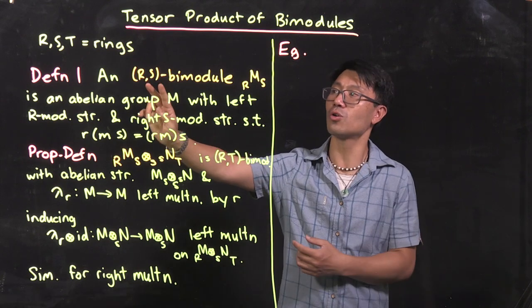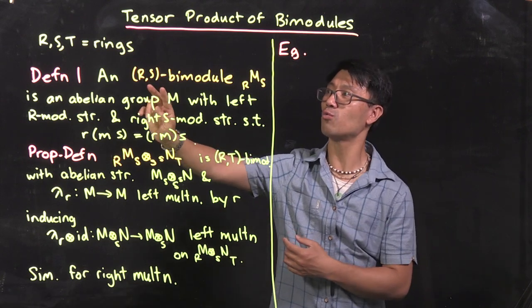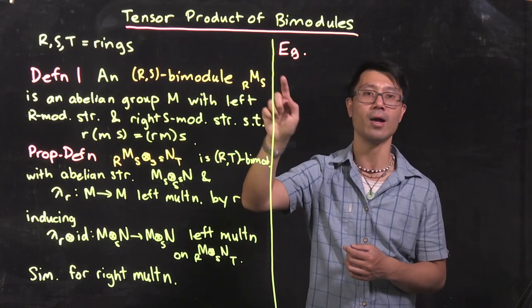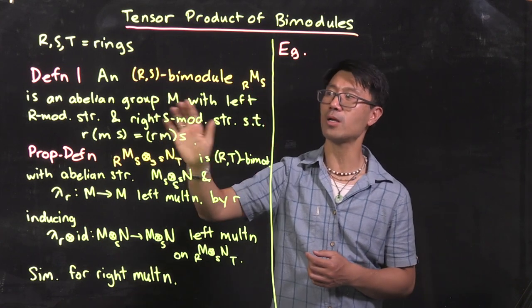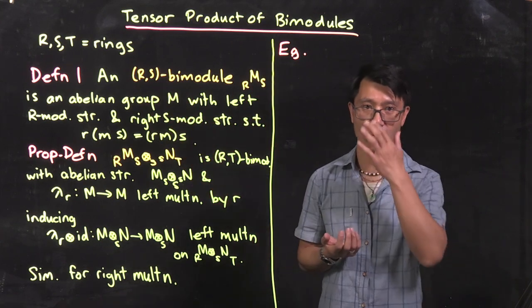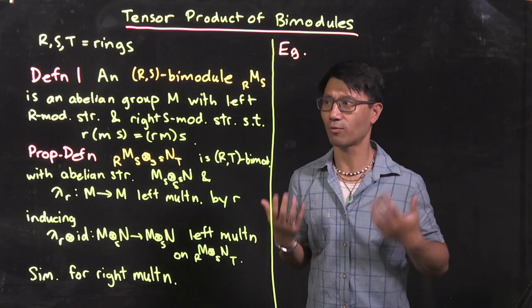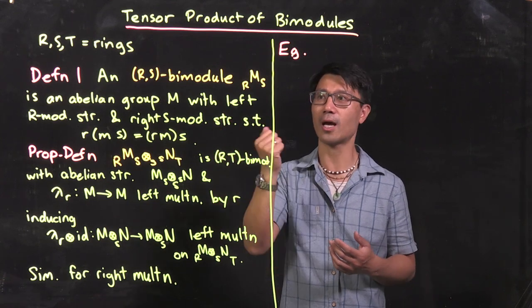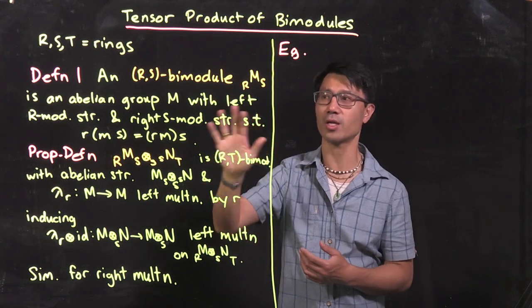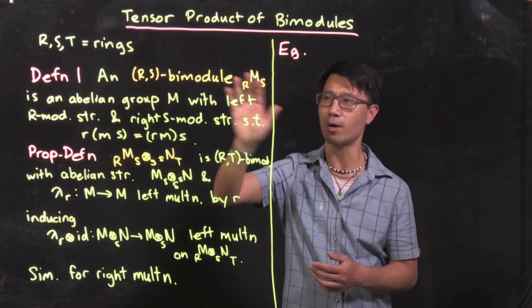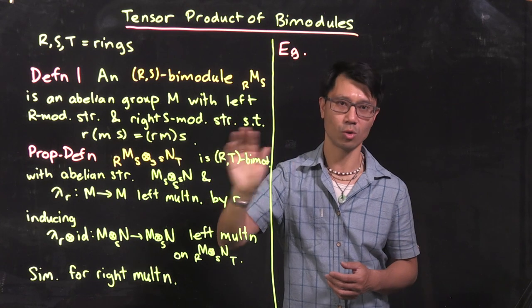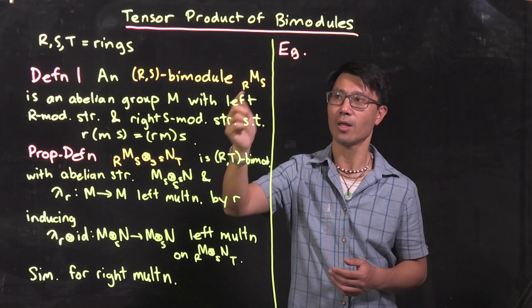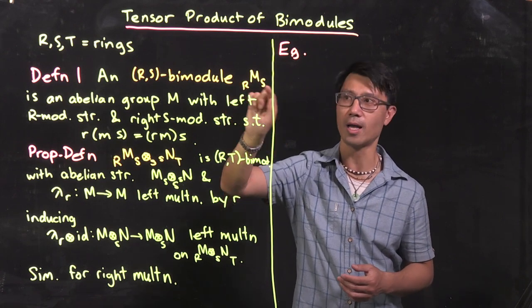What is a bimodule? To define a bimodule, you have to give two rings, R and S. An R,S-bimodule — we'll use a symbol like M with R on the left and S on the right — is firstly an abelian group M, a set with additive structure. Since it's an abelian group, you can put a left R module structure on it by scalar multiplication from R, and also a right S module structure. The R on the left and S on the right remind you that scalars from R act on the left and scalars from S act on the right.